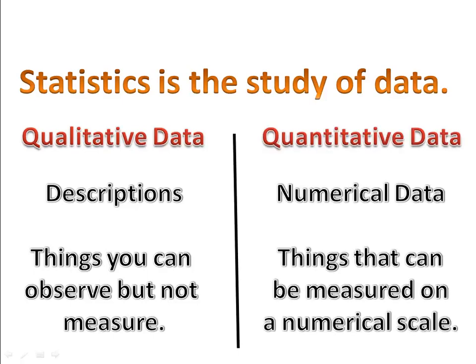Quantitative data, on the other hand, is numerical data. It's things that can be measured on a scale, and it deals with exact numbers. For example, the length of a board, the height of people, the area of a building, the volume of a sphere, weight, speed, time, and so on. Anything that can be measured with an exact quantity is quantitative data.